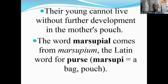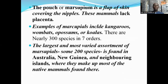Their young cannot live without further development in the mother's pouch. The word marsupial comes from marsupium, the Latin word for pouch — marsupium means a bag or a pouch. The pouch or marsupium is a flap of skin covering the nipples. These marsupial mammals lack a placenta to nourish the embryo until it is mature enough for birth. Examples of marsupials include the kangaroos, the wombats, the opossums, and the koalas.